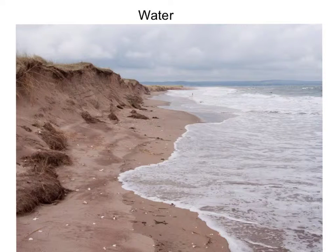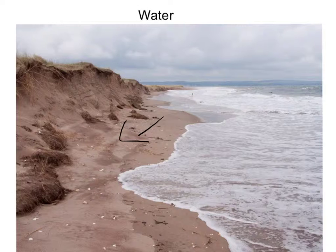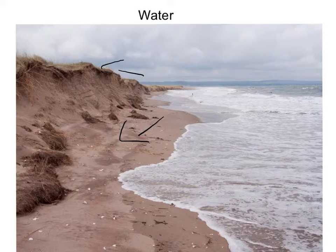The ocean pounds against the rocks on the beach and erodes them until they're sand grains. The sand on the beach used to be huge rocks. For thousands of years, the ocean has smashed against the rocks, causing the rocks to hit each other and chip off a small part each time.